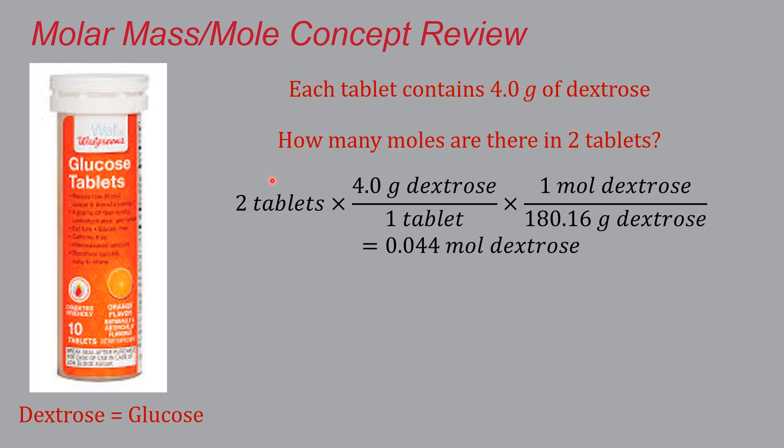The first conversion factor is that each tablet has four grams of dextrose. So four grams of dextrose is equivalent to one tablet and that'll get rid of tablets. That will give us a mass of dextrose in grams. The molar mass of dextrose, 180.16 grams per mole, is the other conversion factor that will take our mass of dextrose to an amount. Tablets cancel, grams of dextrose cancel, we have moles of dextrose. This setup gives us the correct unit. Crunch the numbers and you should get 0.044 moles of dextrose.